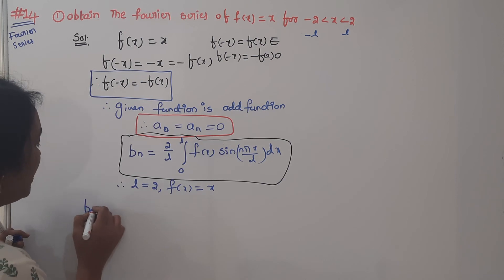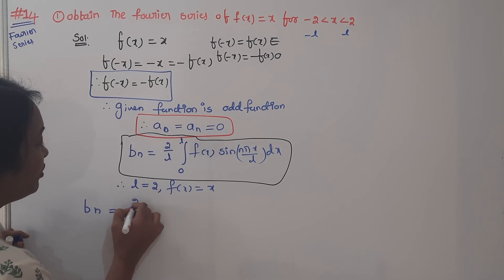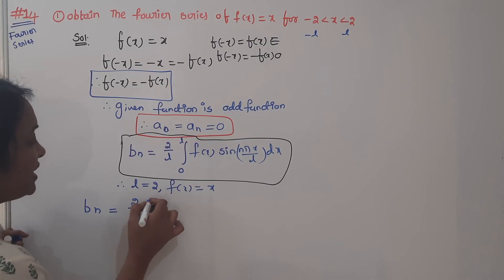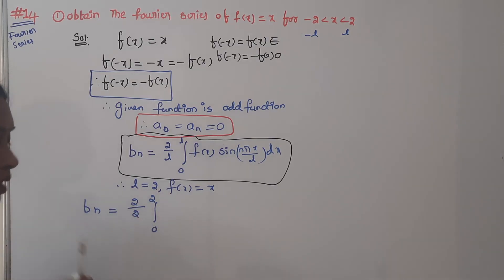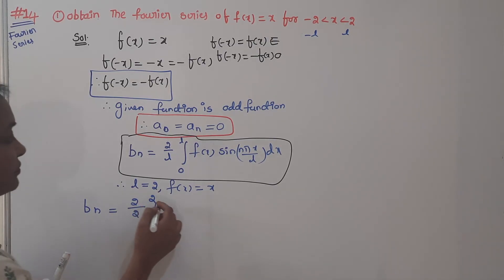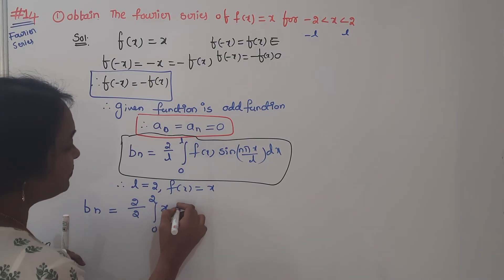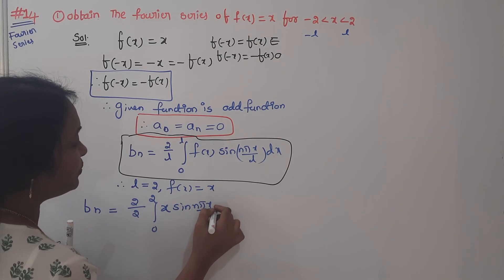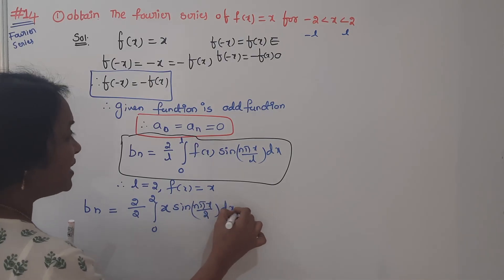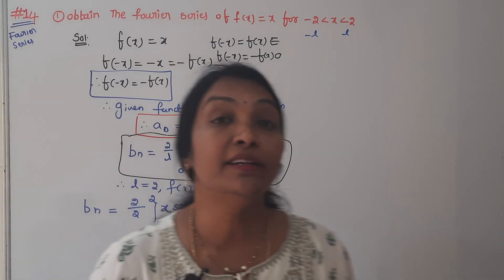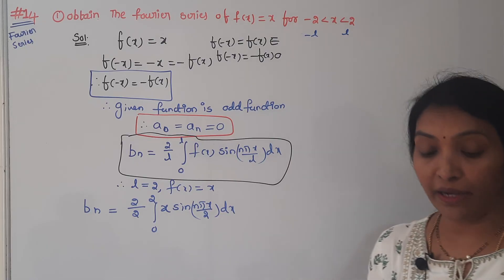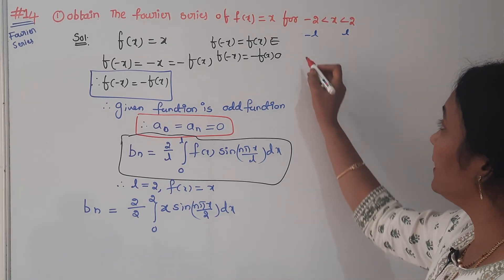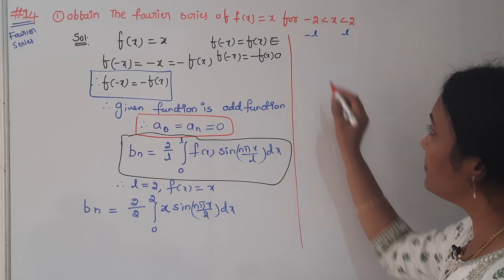Put those values in the formula. bn becomes 2 by L, and since L equals 2 it is 2 by 2, integrated from 0 to 2. f(x) is x, and the expression becomes the integral of x times sin(nπx/2) dx. We will use the formula for integration of uv — the integral of f(x) times g(x).